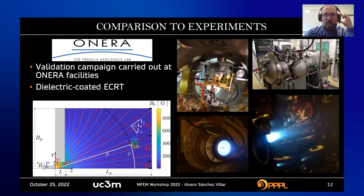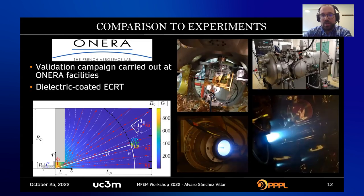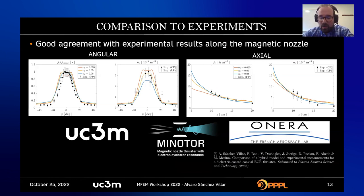During one of my research stays, we were able to make experiments and perform a validation campaign comparing numerical solutions with experiments. Here you can see the vacuum chamber with the thruster operating inside. We obtained solutions of the plasma parameters in very good agreement with the experimental results. However, we also found some limitations of our model that gave us clear paths for future improvements.